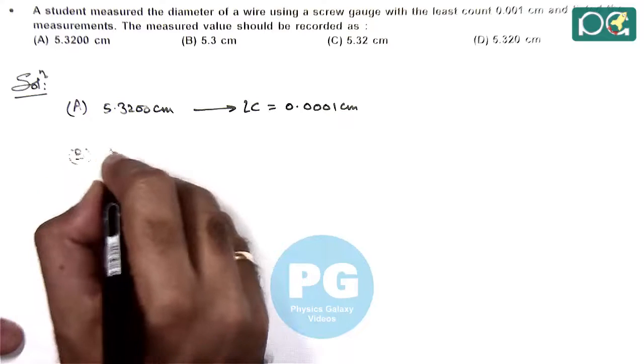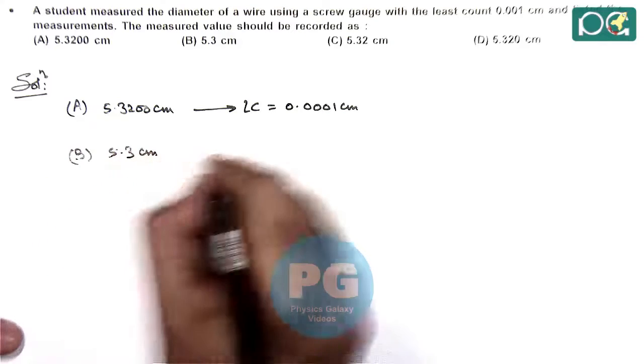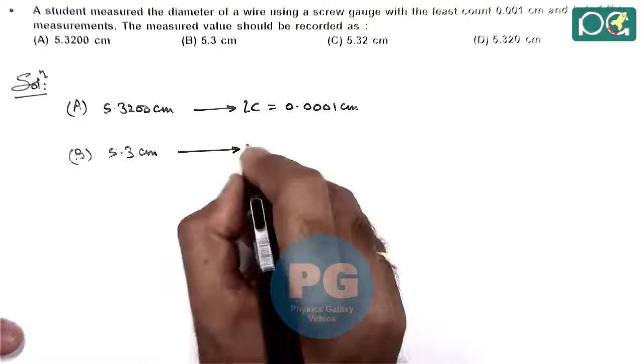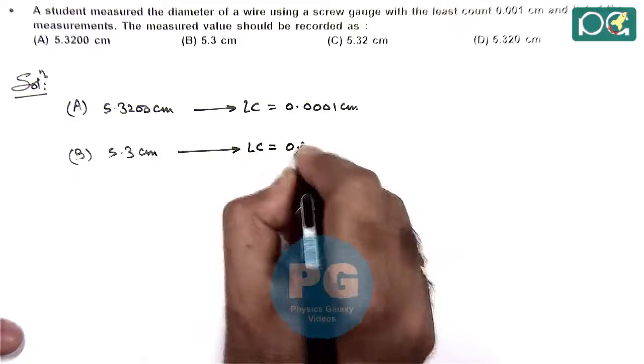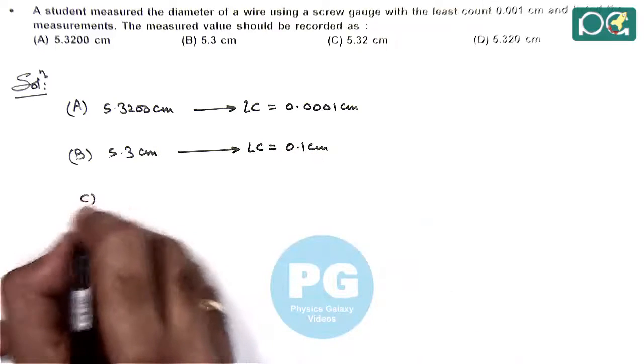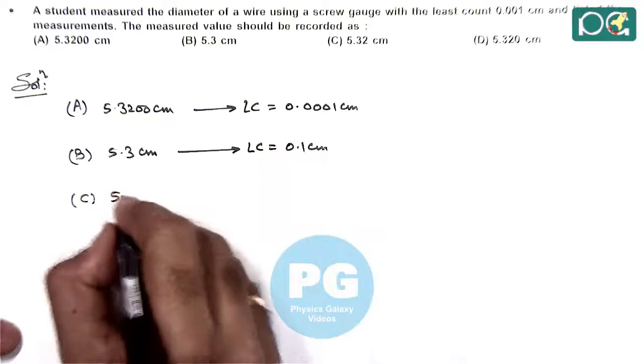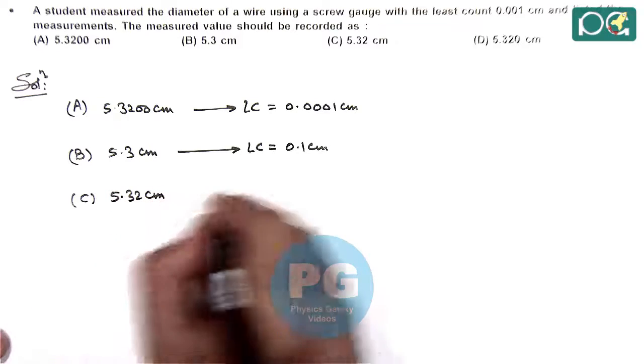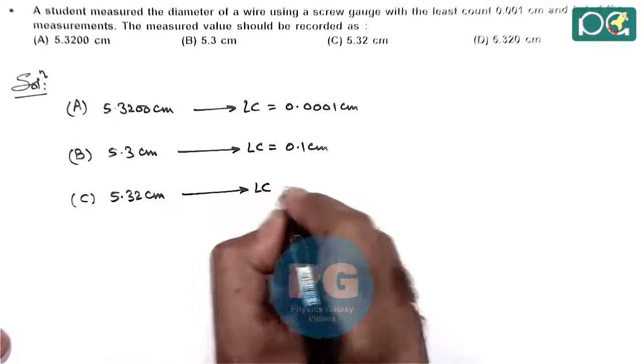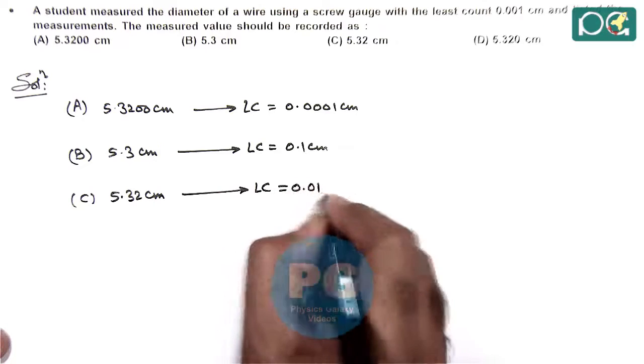In option B it is saying 5.3 centimeter, so here least count in this reading is 0.1 centimeter. For option C it is 5.32 centimeter, so the least count here is 0.01 centimeter.